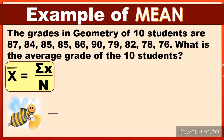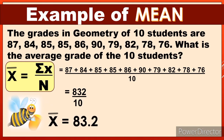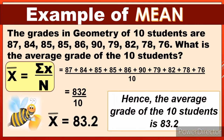Now we are going to use this formula: x-bar equals the summation of x over n. So we are going to add those grades: 87 + 84 + 85 + 85 + 86 + 90 + 79 + 82 + 78 + 76, divided by n which is 10. Note that n is the number of cases. We have 832 divided by 10. The answer is 83.2. Hence, the average grade of the 10 students is 83.2.